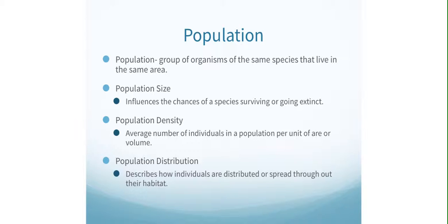So let's get into the first idea: population size. This may seem obvious, but population size is the number of individuals in a population. An example would be a population of insects might consist of 100 individual insects — that is the population size. Population size influences the chances of a species surviving or going extinct, which makes sense. If there is only one of a species, that population size is very small and it's probably going to go extinct after some time.